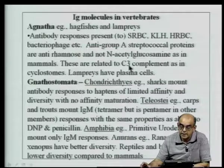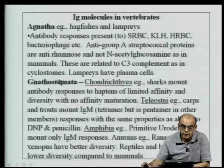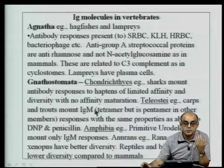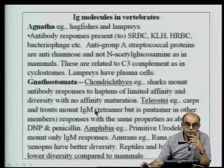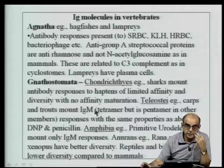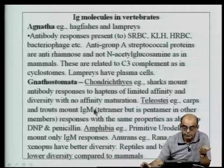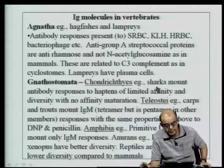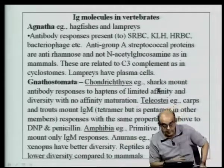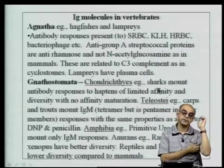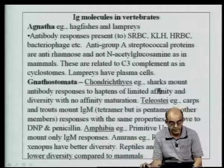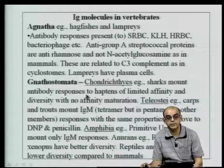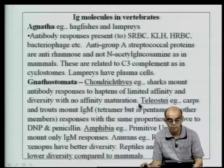All of these are related to C3 complement, and lampreys have been found to actually have plasma cells — differentiated B lymphocytes that secrete large quantities of immunoglobulin molecules. In gnathostomata, such as chondrichthyes, examples being sharks, which have a good immune system and can mount antibody responses even to haptens, but they have limited affinity and the diversification and affinity maturation that happens in higher mammals is kind of limited.